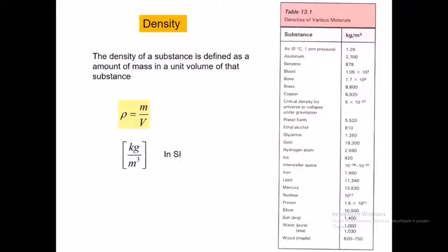Let's define what density is. The density of a substance is defined as the amount of mass in a unit volume of that substance. Density is denoted with the letter rho, and rho equals mass divided by volume. The SI unit of density is kilograms per cubic meter — meaning how many kilograms of the substance per cubic meter.